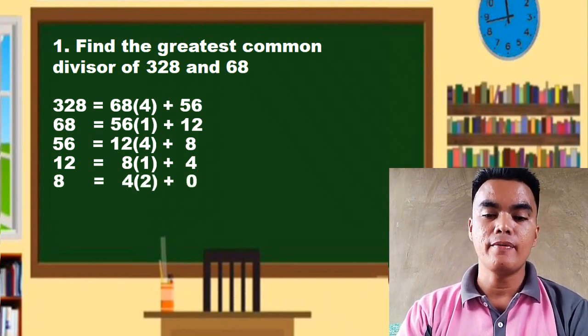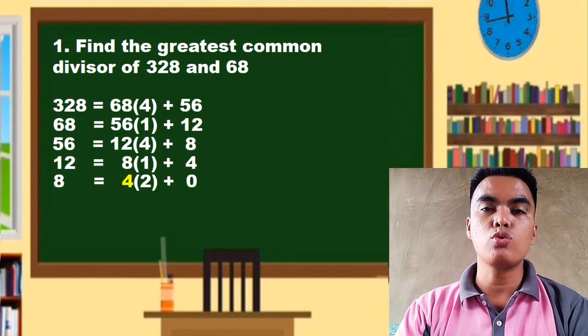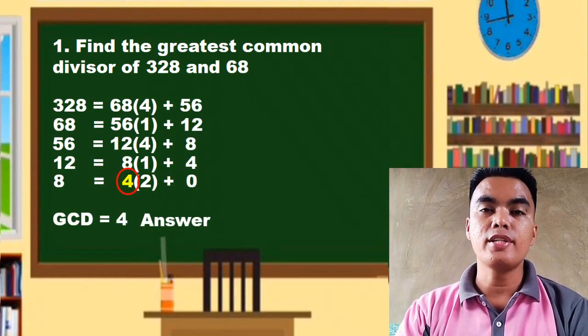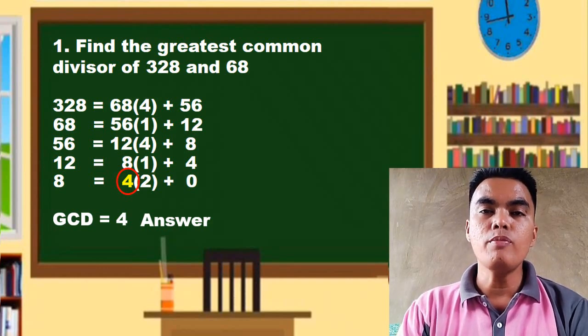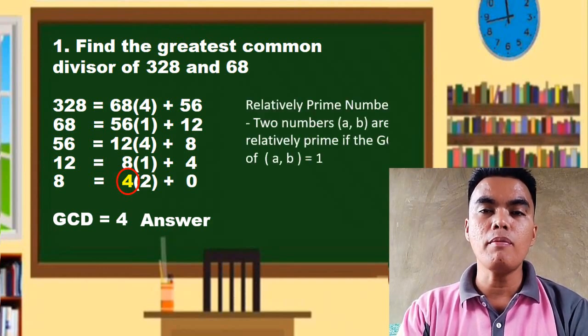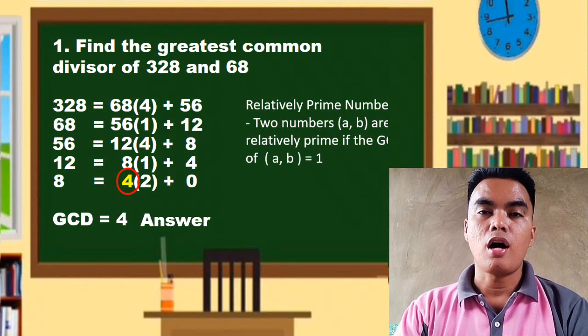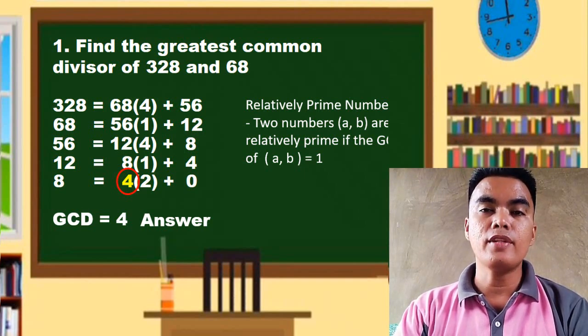and 8 is equal to 4 times 2 plus 0, meaning the GCD of these two numbers, 328 and 68, is equal to 4. Now you must also remember that two numbers a and b are relatively prime if the GCD of a and b is equal to 1.